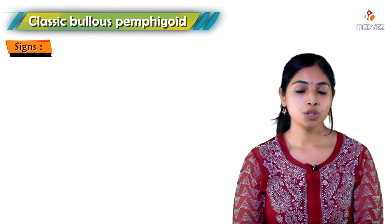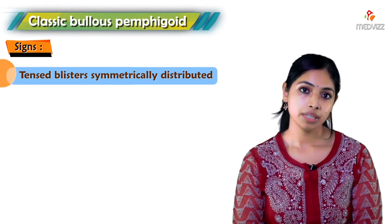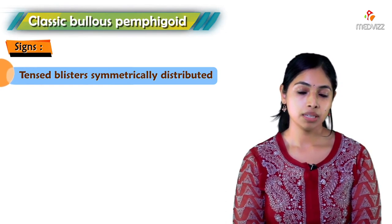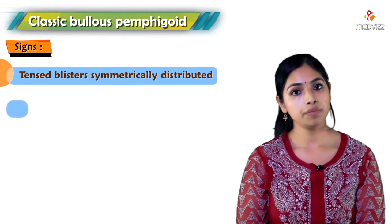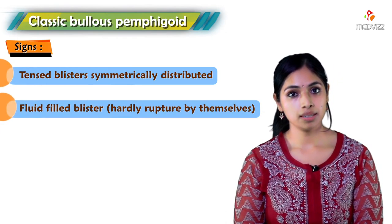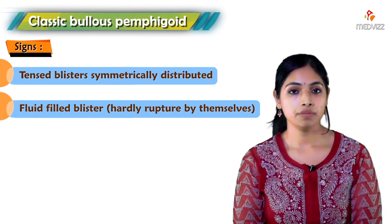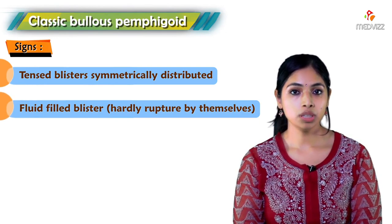The blisters in bullous pemphigoid are often tense, in comparison to pemphigus where we see flaccid blisters. This is a key differentiating feature between the two conditions.